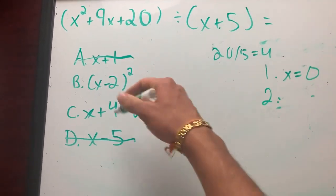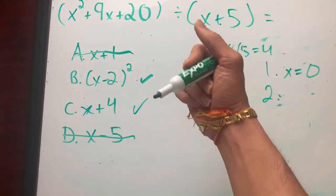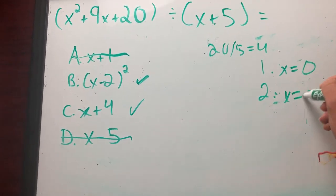So now let's plug in x equals one since there's two choices left. Sometimes there's only one choice left. You have your answer and you're done.